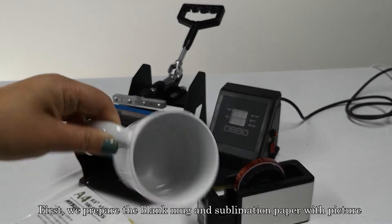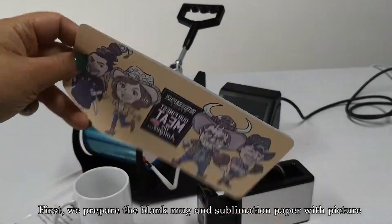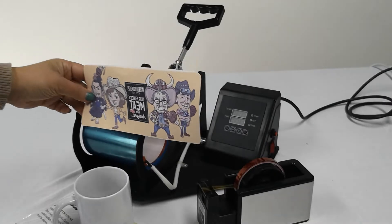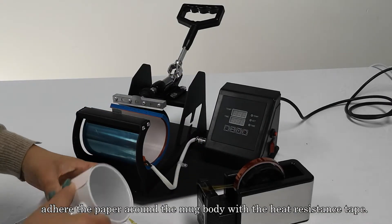First, we prepare the blank mug and sublimation paper with a picture. Adhere the paper around the mug body with the heat resistance tape.